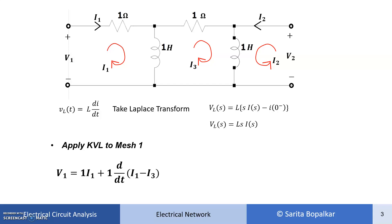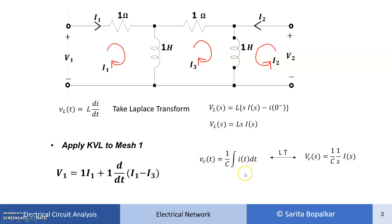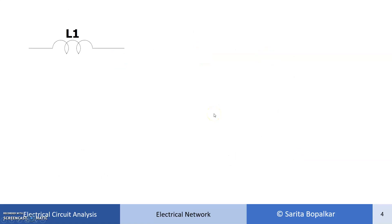Similarly, for a capacitor the voltage is (1/C)·∫I(t)dt. The Laplace transform of this integration gives (1/C)·(1/S)·I(S). So whenever there is a capacitor in your network, you transform it as 1/(CS). To summarize: inductors are replaced by LS, and capacitors are replaced by 1/(CS).